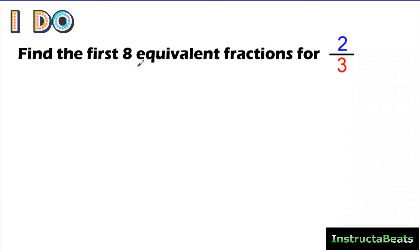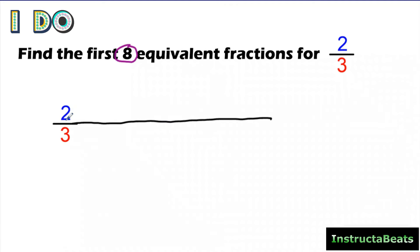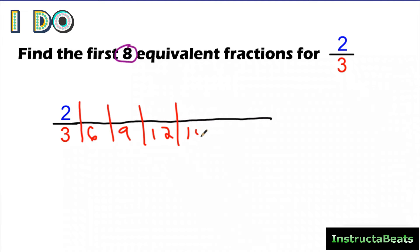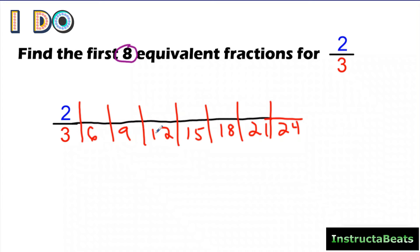So if I wanted to do this problem — I want to find the first eight equivalent fractions for two-thirds. So I have two-thirds, and I'm going to color code this. I'm going to draw my fraction line all the way out here and start with my denominator. My denominator is three, so when I skip count by three I get: three, six, nine, twelve, fifteen, eighteen, twenty-one, twenty-four. That's eight denominators that I can make equivalent fractions with for two-thirds.